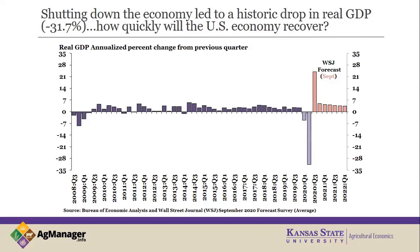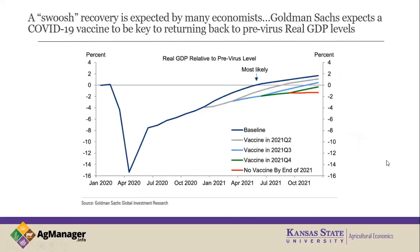A lot of these forecasts hinge on a vaccine. Goldman Sachs put out a nice report: in their baseline recovery they assume a widespread COVID vaccine is available in Q1 of 2021, at which point we would recover back to pre-pandemic real GDP levels around Q2 of 2021. As the vaccine rollout gets pushed further out, recovery lines begin to fall. With no vaccine, Goldman Sachs doesn't predict us reaching pre-pandemic GDP levels through 2021.